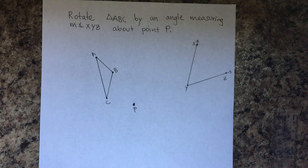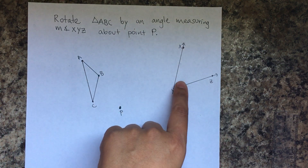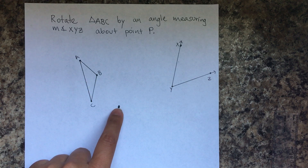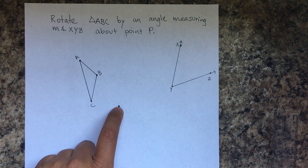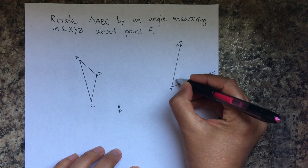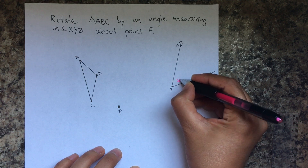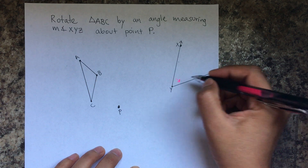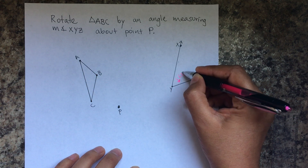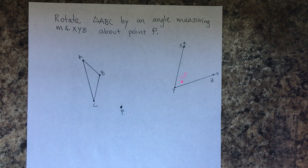This is what you start with: rotate triangle ABC by an angle measuring the measurement of angle XYZ about point P. That's our point of rotation. We're going to rotate it clockwise, which means the degrees are going to be negative. I already measured it — it's going to be negative 63 degrees.